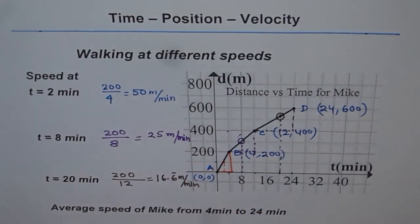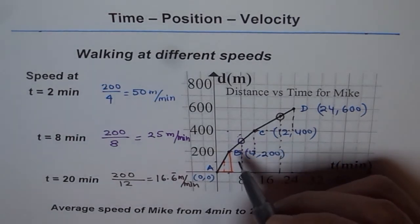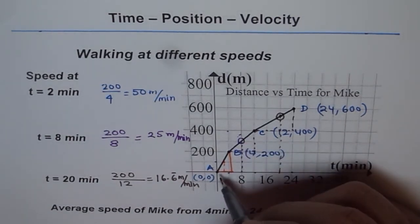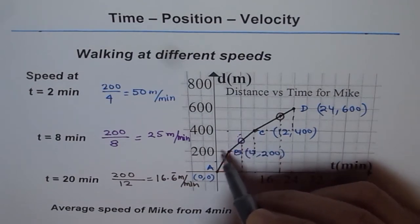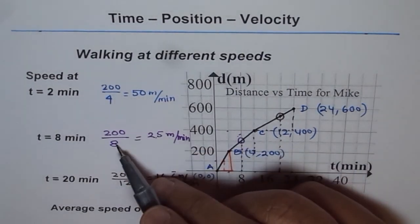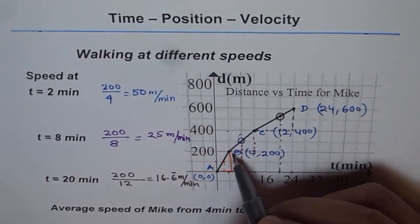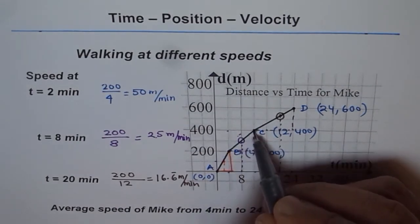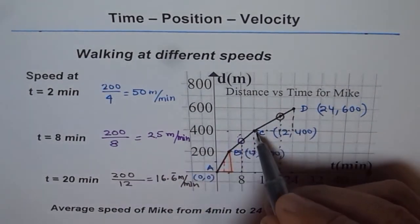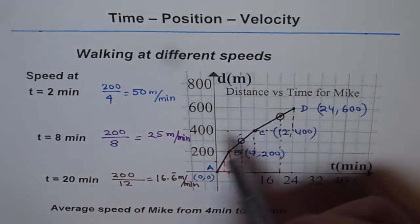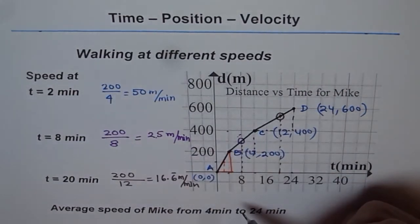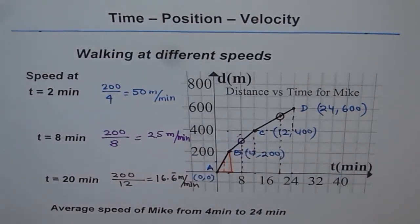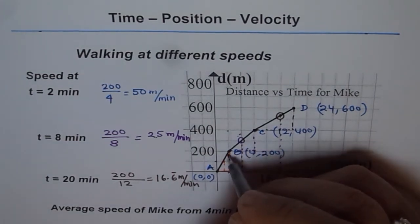We can see the speeds are different: during leg AB the speed is highest; during BC the speed is half of AB; and during CD it is one-third of AB. Slope gives us the speed, and along any straight line segment the speed is constant.